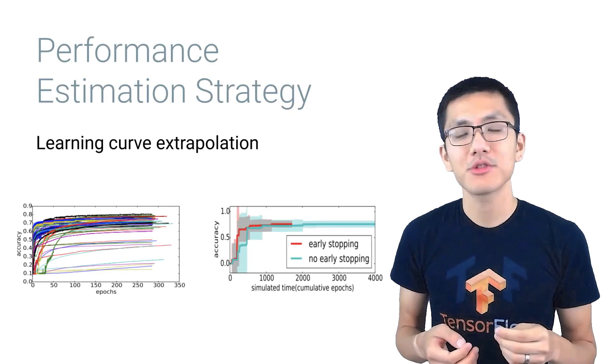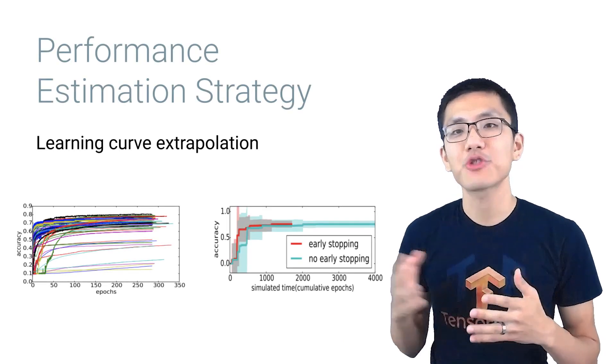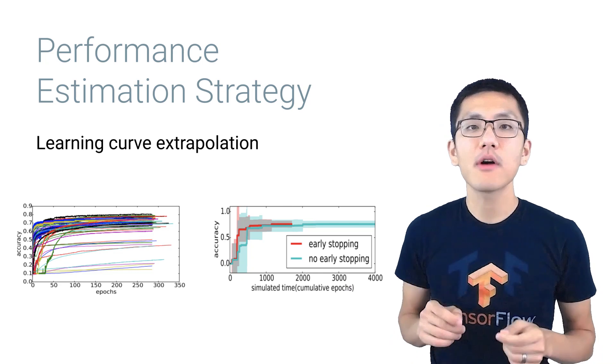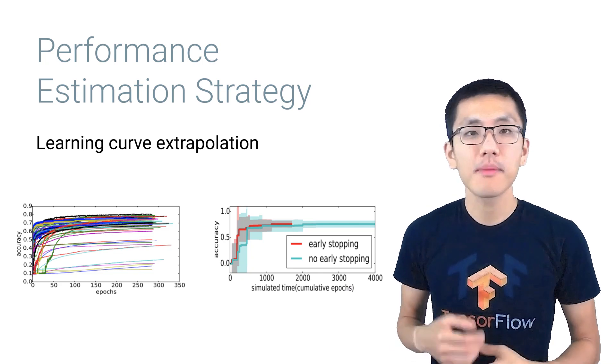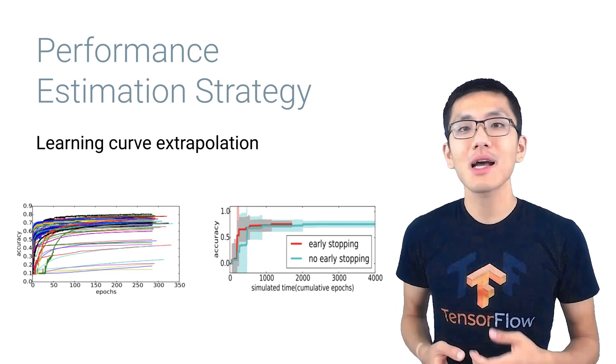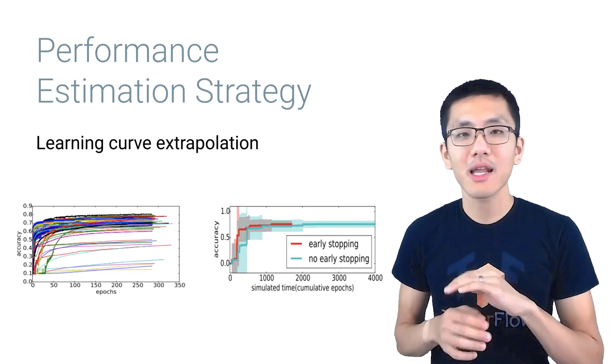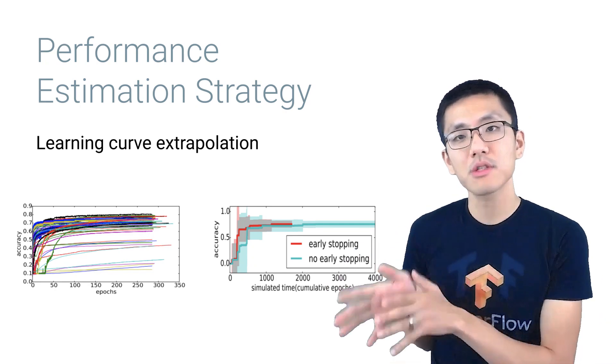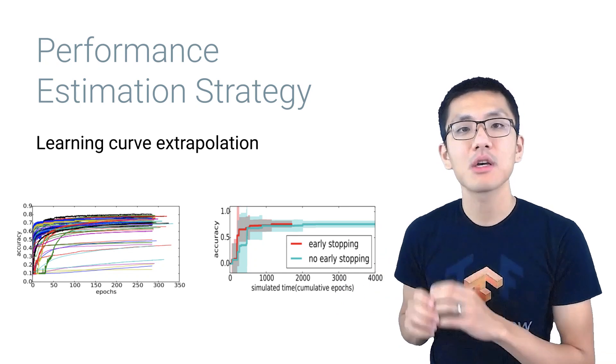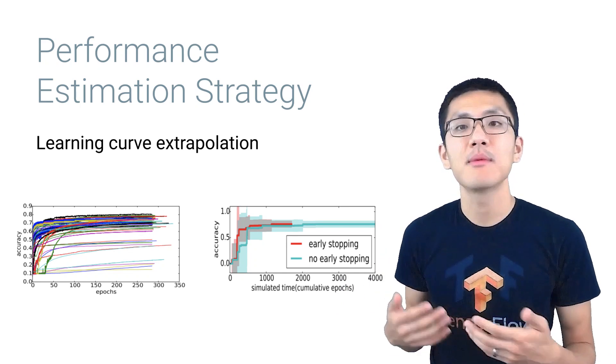Another performance estimation strategy is called learning curve extrapolation. This approach involves stopping training early when a model does not seem to be going anywhere fast. And so time can be saved by not training it any further and then directing those resources toward more promising models whose training metrics are improving more rapidly.